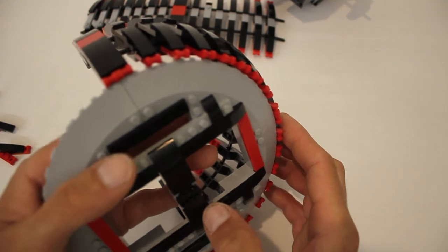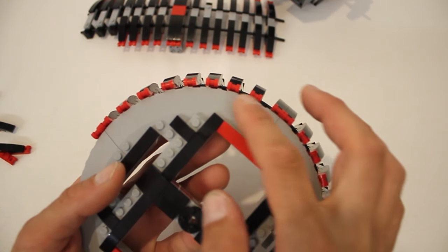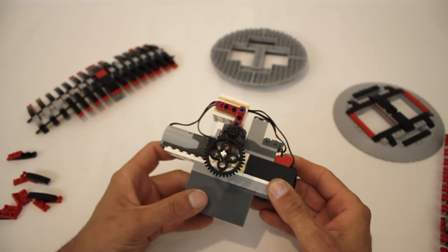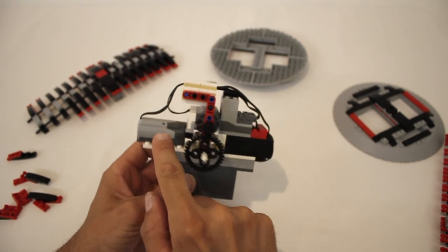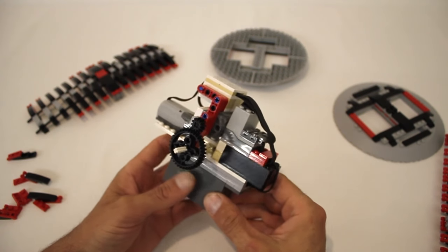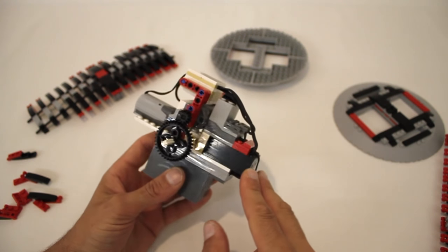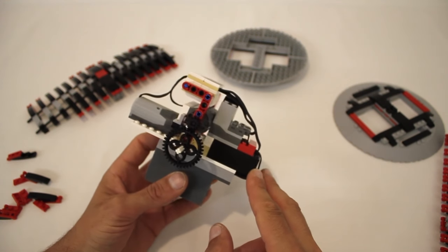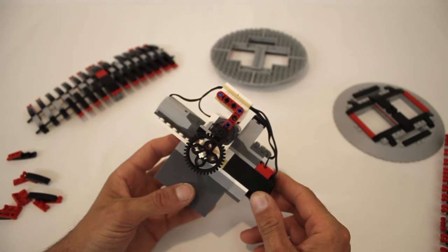This is the engine of the wheel, and here is a battery box, two power functions M motors, the infrared receiver, and I have two weight bricks here that act as a counterweight, which is what the propulsion and steering are based around.